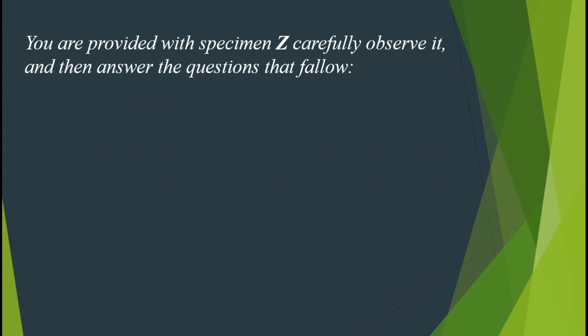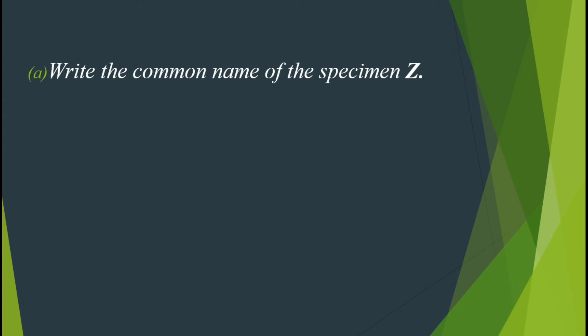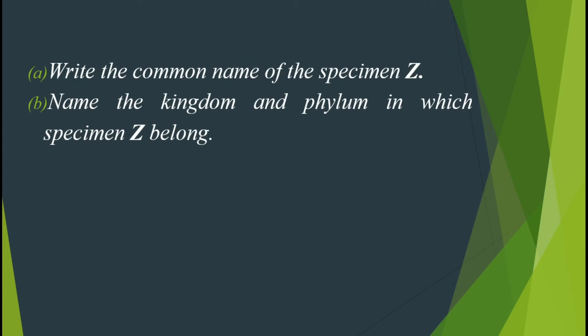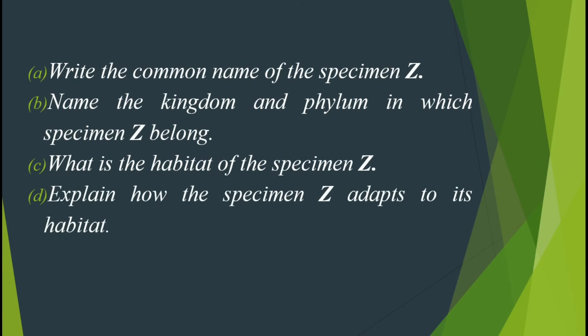So let us go direct to the question. The question is asking us: you are provided with specimen D — observe it, and then answer the questions that follow. The first question is asking us to write the common name of specimen D. The second question: name the kingdom and phylum in which specimen D belongs. The third question is asking us what is the habitat of specimen D, and also explain how specimen D adapts to its habitat.